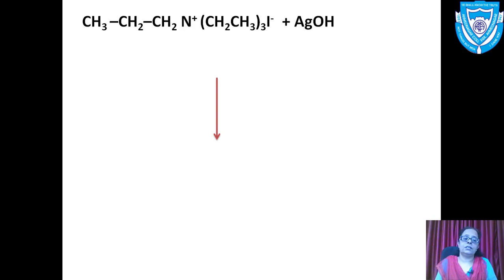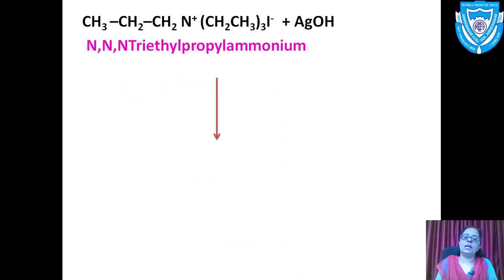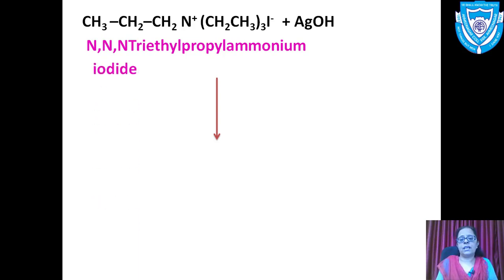This structure is N,N-triethyl propyl ammonium iodide, where three ethyl groups are attached to nitrogen along with one n-propyl group. This is again a quaternary ammonium salt.